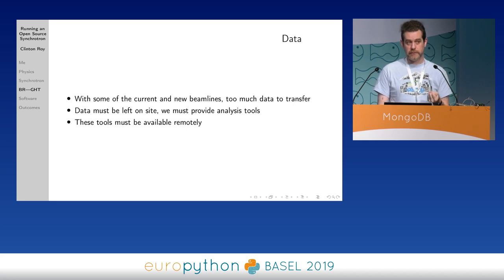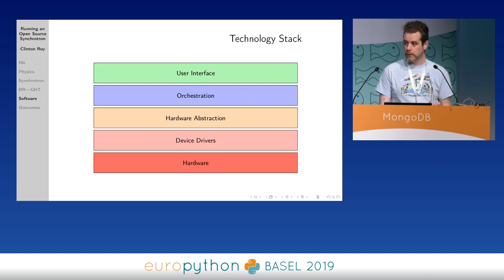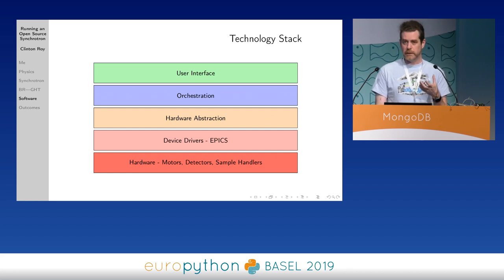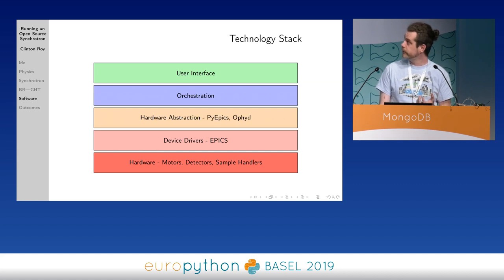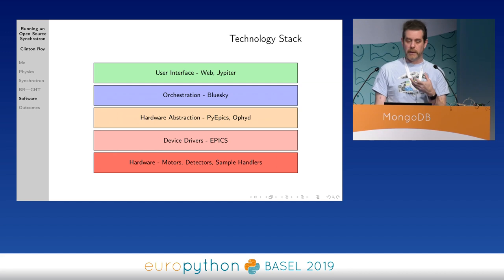There's a lot of data generated, and for some beamlines there's too much data for the researchers to take home, so it has to be stored on site. That means we have to provide the analysis tools on site, and all of those tools must be made available for remote users as well. Looking at the technology stack: we've got motors, detectors and sample handlers as the hardware. We're using an open source library called EPICS, which is used in a lot of physical installations around the world so we definitely don't have to reinvent the wheel. On top of that we're using PyEPICS, which exposes the C library to a Python world, and then Ophyd which hides a lot of the details. BlueSky is used to orchestrate our experiments, and then we'll be creating web frontends to drive all this, which means they're available remotely as well.